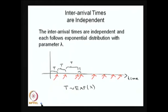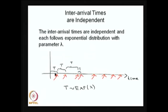From the second property, inter-arrival times are independent, and we can also conclude that inter-arrival times are exponentially distributed. The inter-arrival times are independent and each follows an exponential distribution with parameter λ. The inter-arrival time refers to the time taken for the first arrival, then the interval from the first to the second arrival, from second to third, and so on.